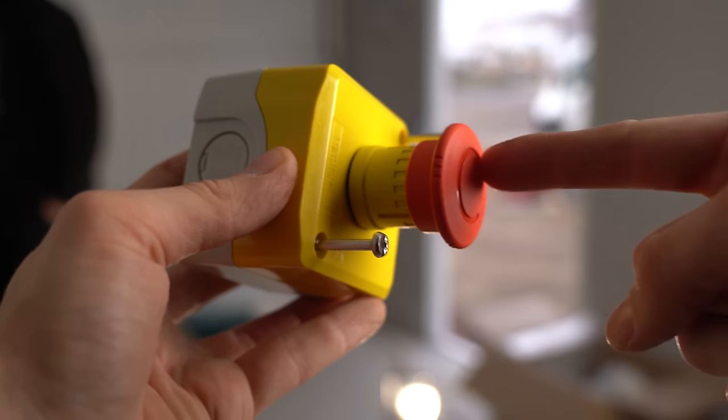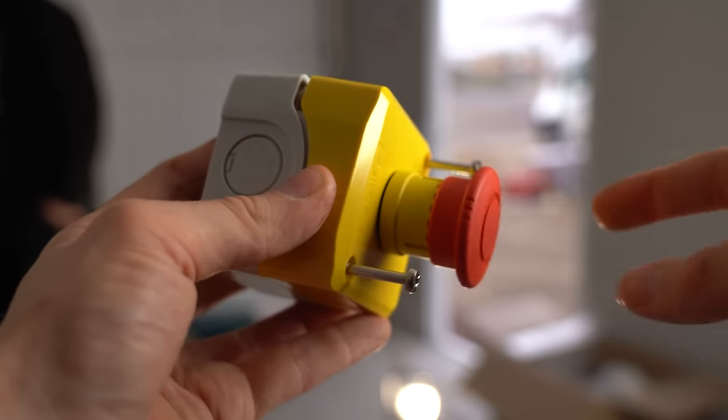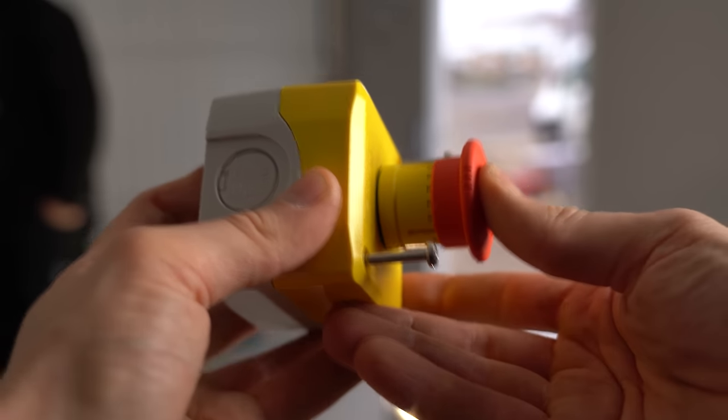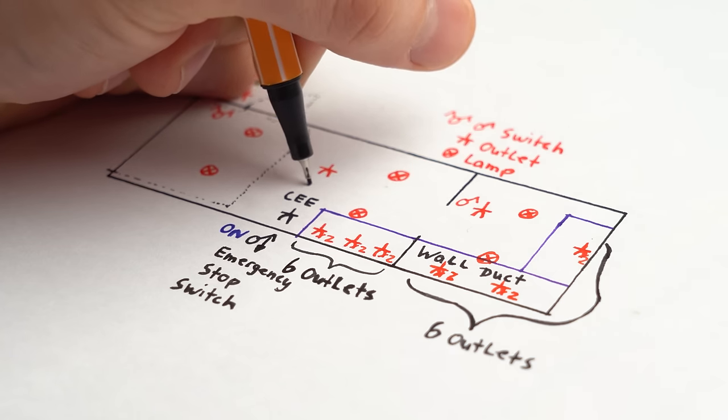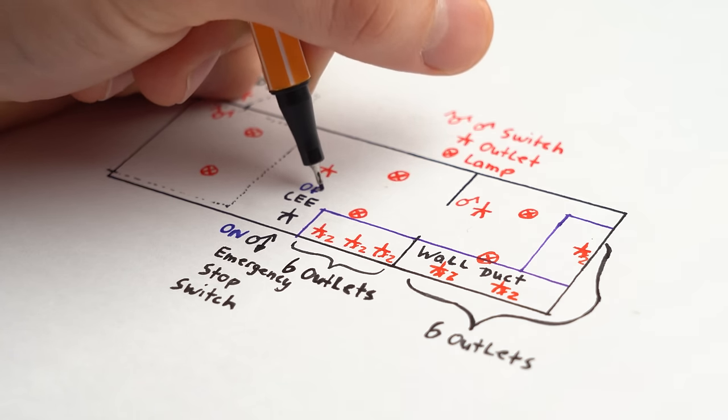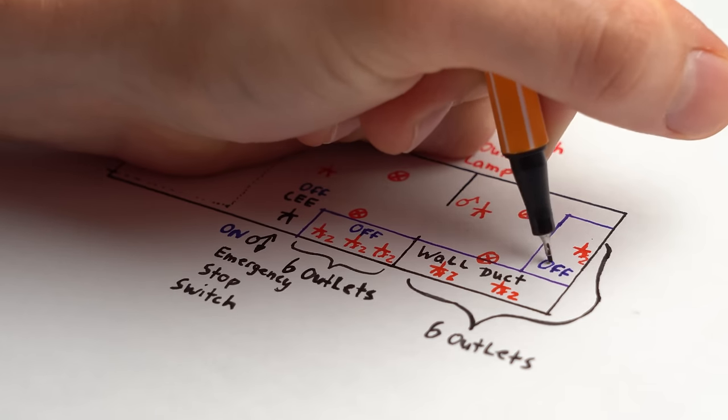And I think emergency stop switches like this one are pretty self-explanatory, meaning that if they get pushed, I want them to immediately turn off the CEE socket as well as the outlets on the workbench.